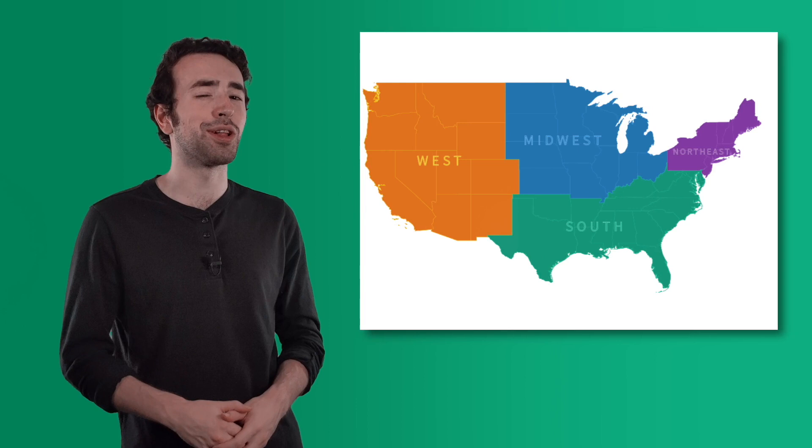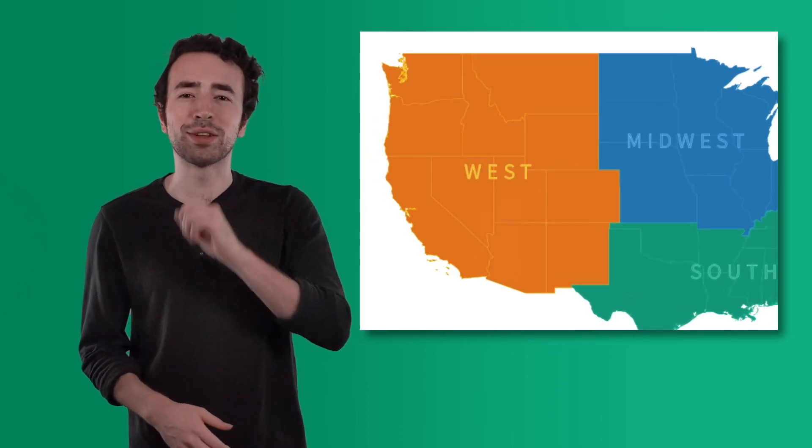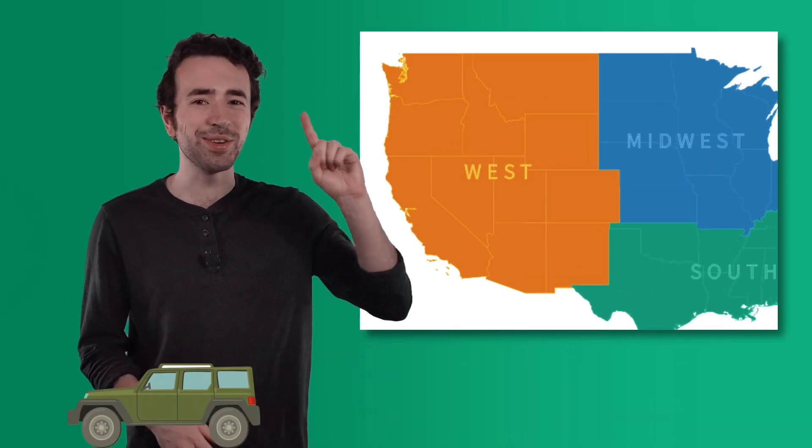We learned so much about the Midwest today just by reading maps. Knowing how to read different types of maps is like having a toolbox full of tools. Just like how we use hammers and wrenches for different jobs, we can use different maps to learn different things about a place. Next time on our road trip, we'll be going one step further and analyzing what life in a place must be like based on what we learn by reading maps. I can't wait to learn all about the West with you on our final stop on our road trip. See you next time.